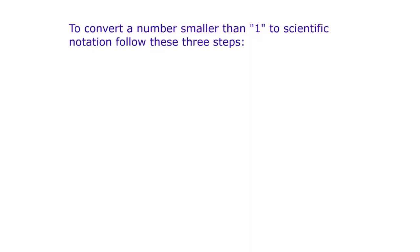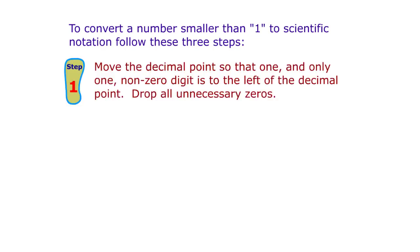To convert a number smaller than one to scientific notation, follow these three steps. Step 1: Move the decimal point so that one, and only one, non-zero digit is to the left of the decimal point. Drop all unnecessary zeros.